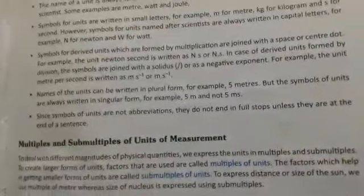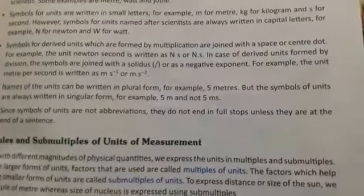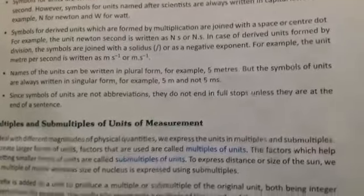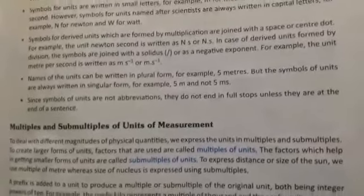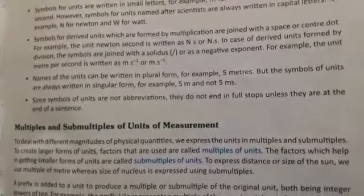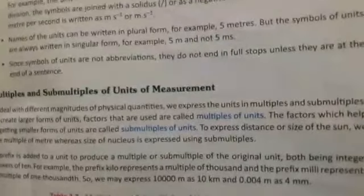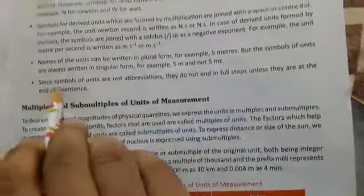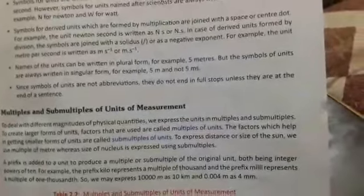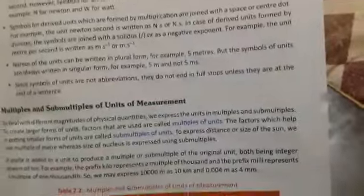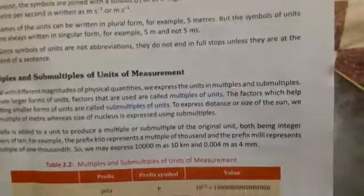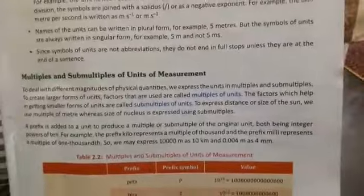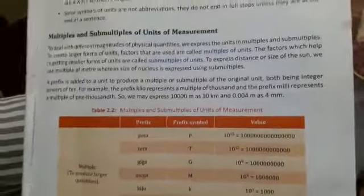Fourth point is the name of the unit can be written in plural form, for example 5 meters. But the symbol of units are always written in singular form, for example 5 m, not 5 ms but only 5 m. Last one is since symbols of unit are not abbreviations, they do not end in full stop unless they are at the end of a sentence. Remember it, these are the rules.